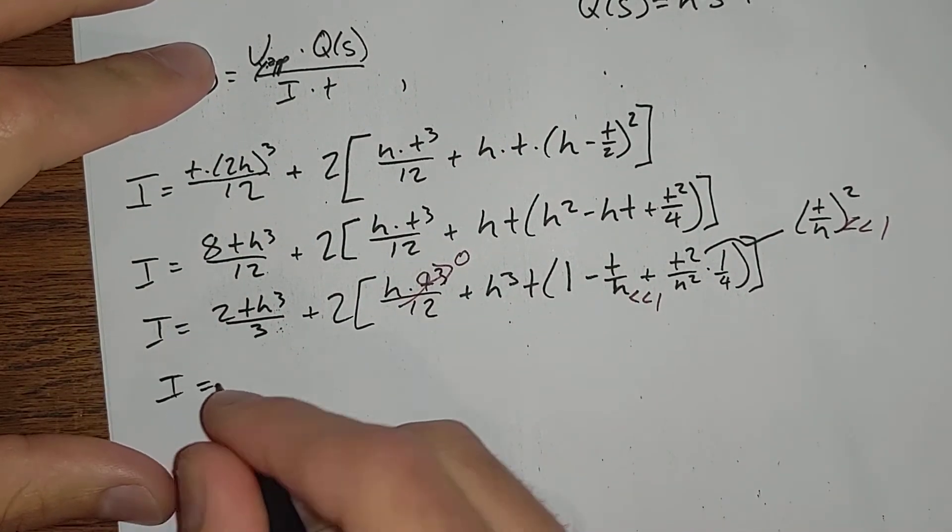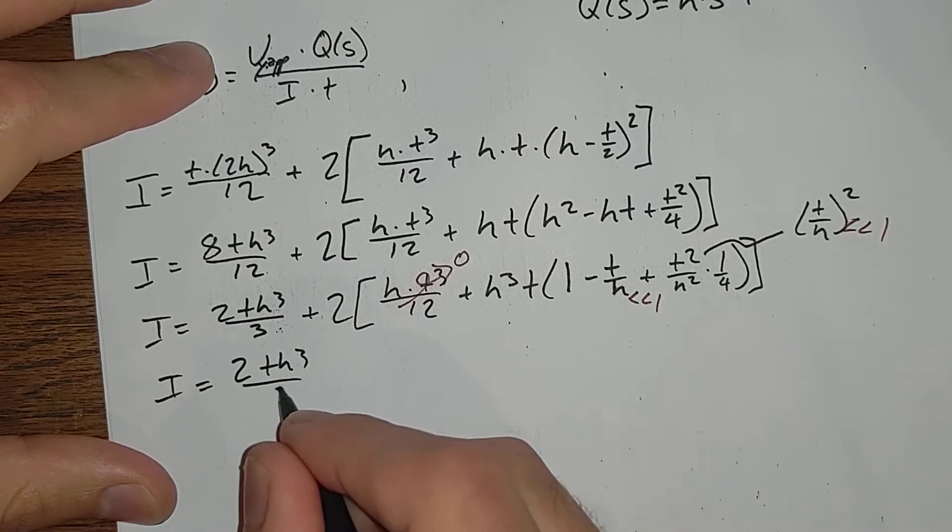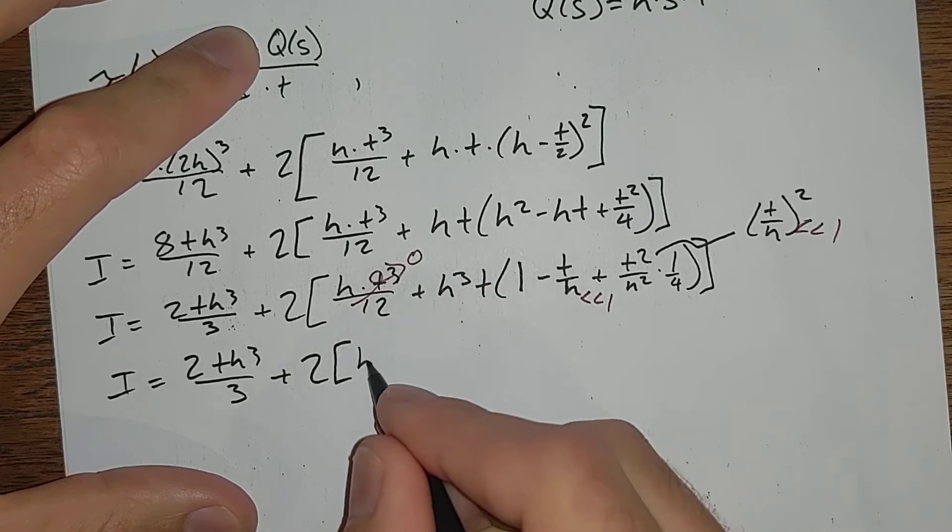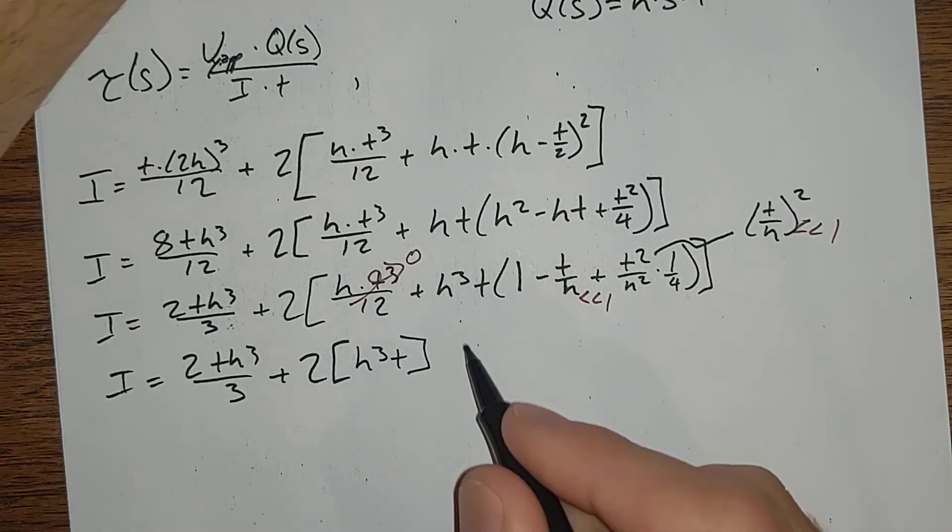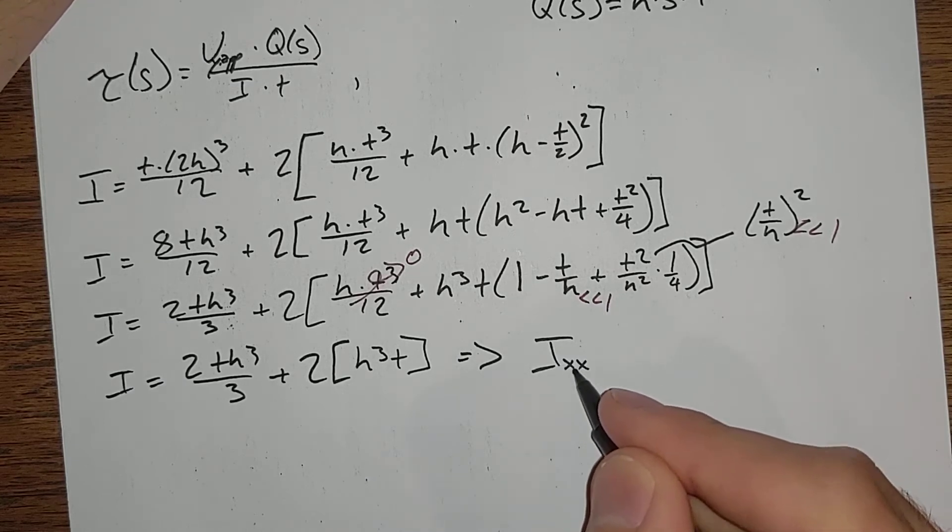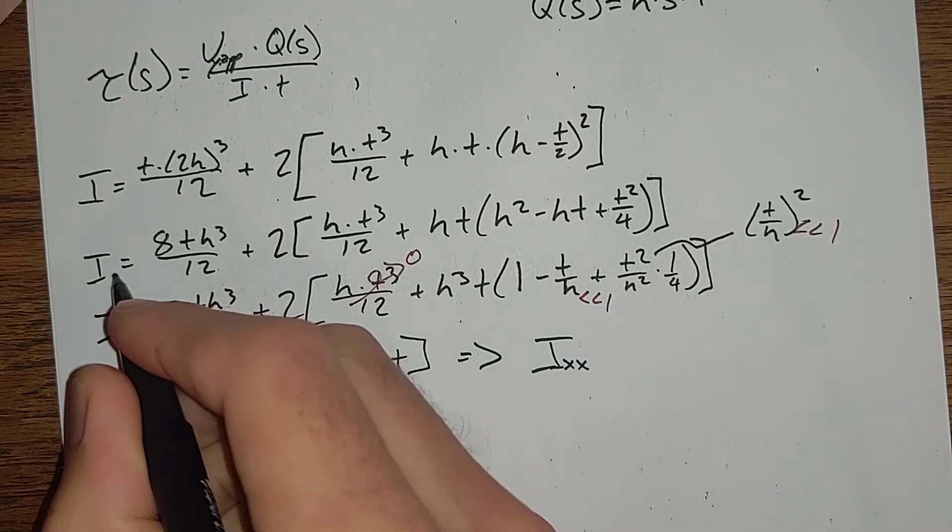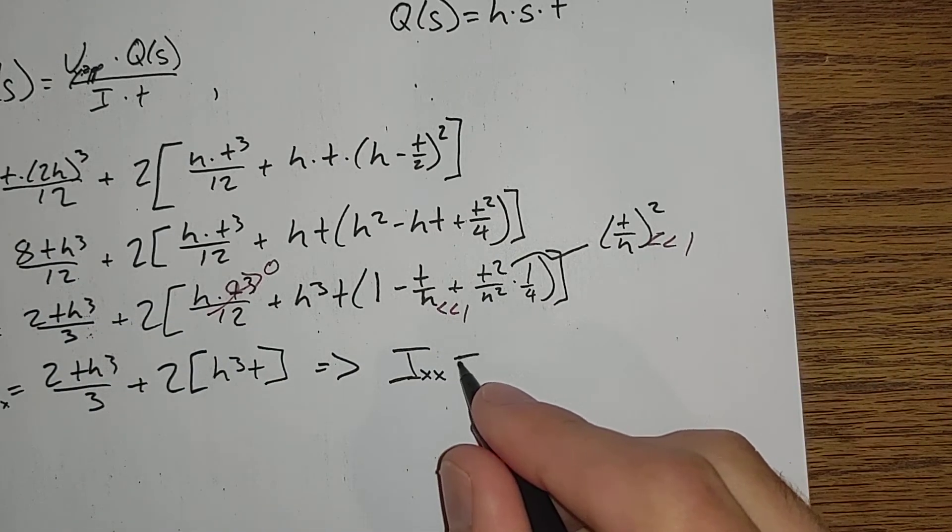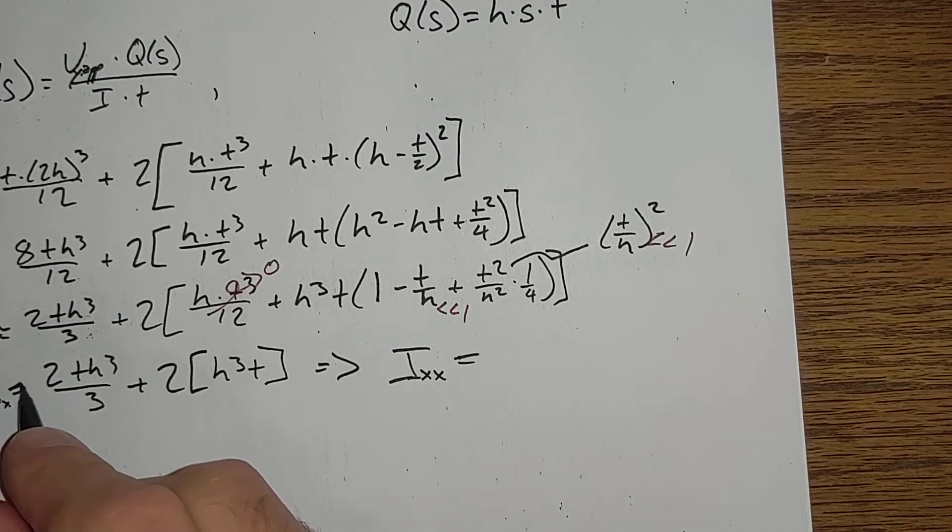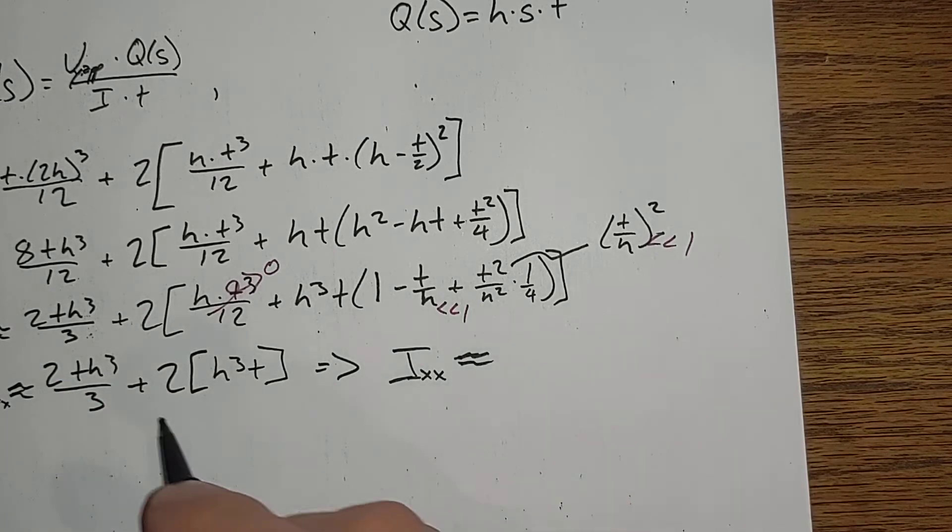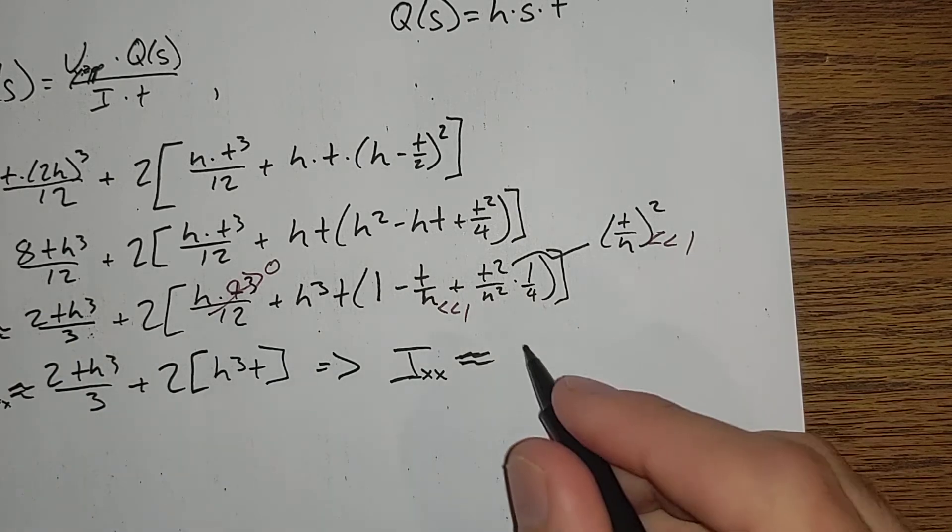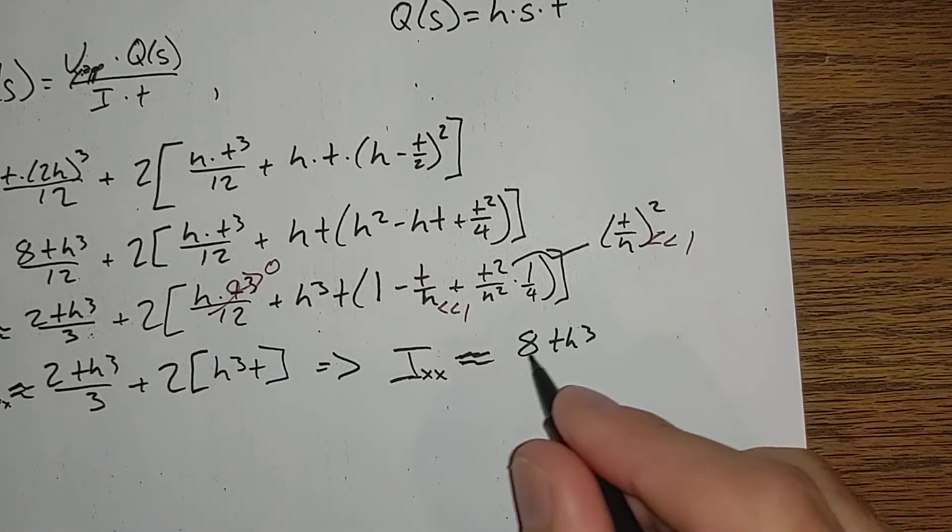This gives us I equals 2th cubed over 3 plus 2 times h cubed t. I_xx should have had that going the whole time to keep us straight, is approximately equal to, we've got 2 thirds h cubed t, 8th cubed over 3.